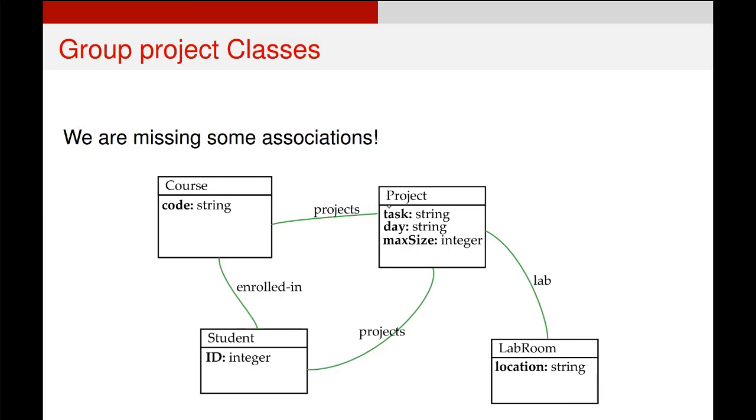This one here, the association between course and project, is a little bit more simple. We're saying each course will have several projects, which is why we use the plural in there. And then if we look at the relationship between project and lab room, we know that each project only requires one room. So we just use the label lab rather than labs, which would imply there's more than one.